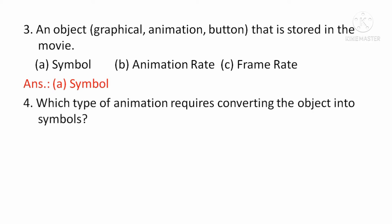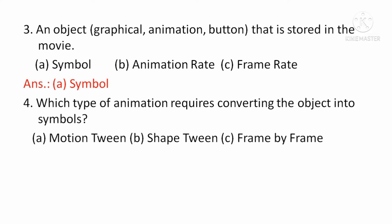Next, which type of animation requires converting the object into symbols? Means, किस type के animation में object को symbol में convert करने की जरूरत होती है? Option A: Motion Tween, Option B: Shape Tween, Option C: Frame By Frame. इसका right answer होगा Option A, Motion Tween.